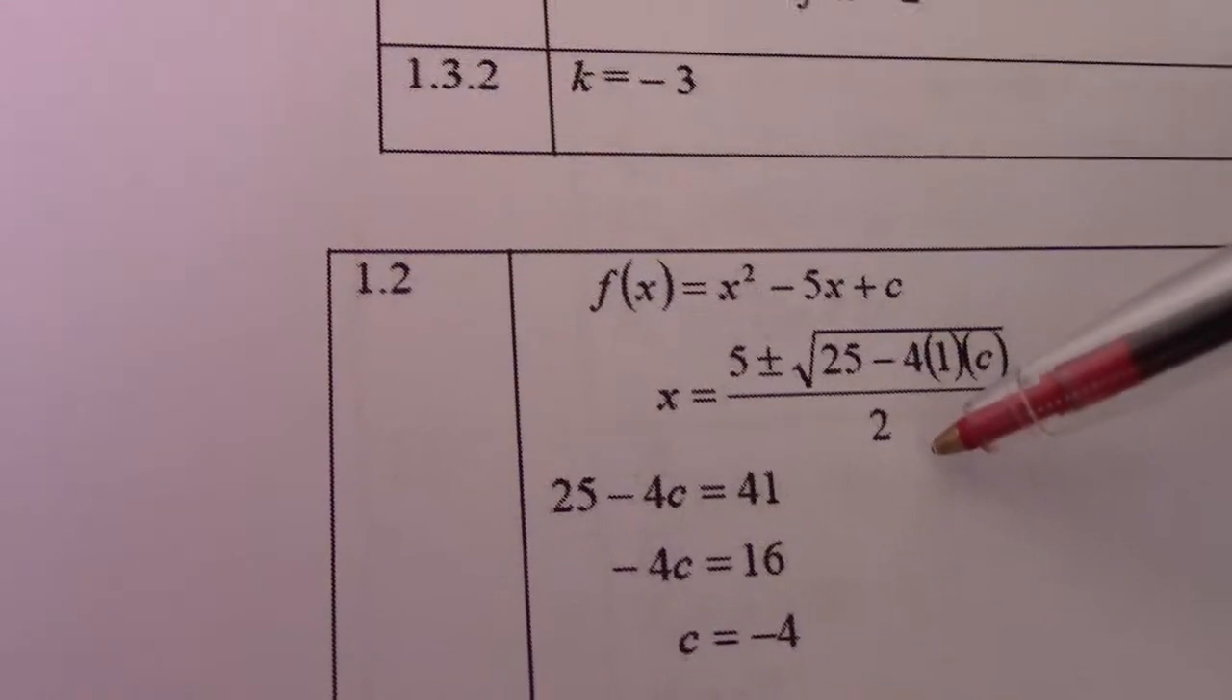So from there, if we solve further, that is given to us equal to (5 ± √41) / 2. So I can say this in the bracket here must equal 41, given as 41.